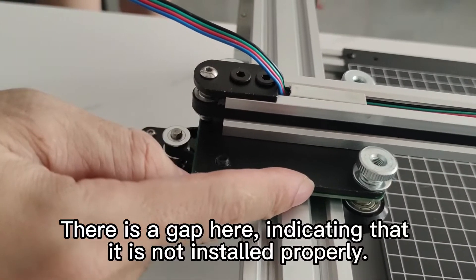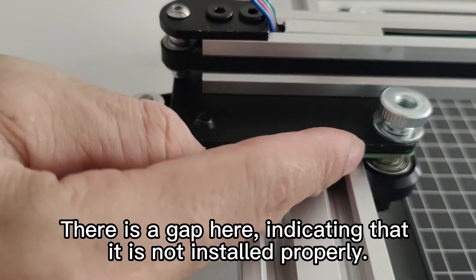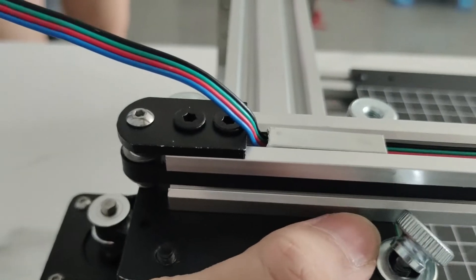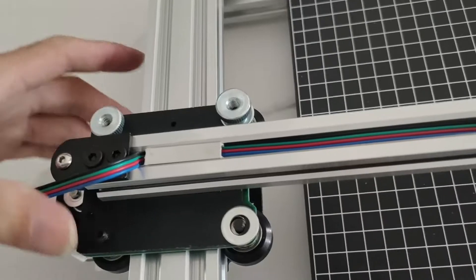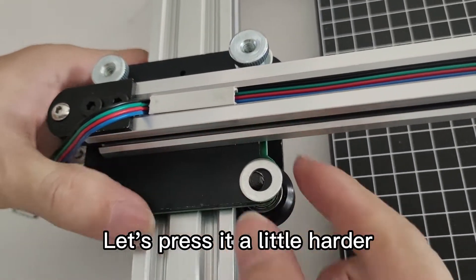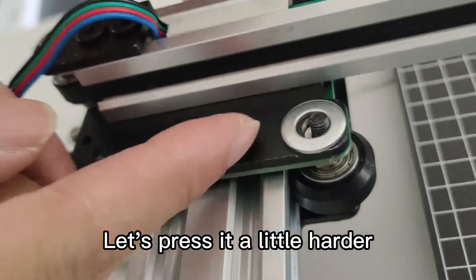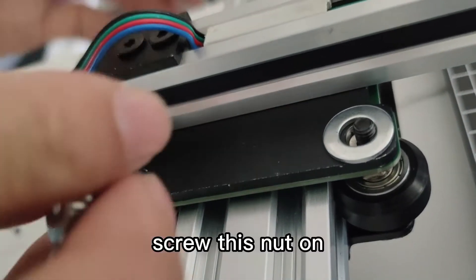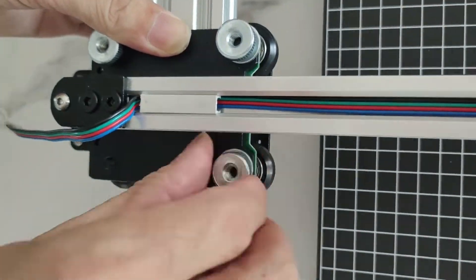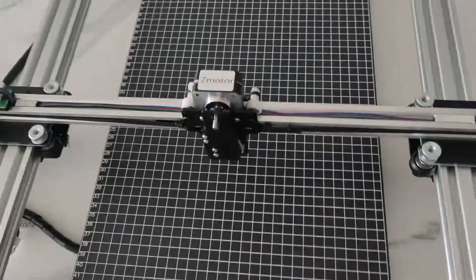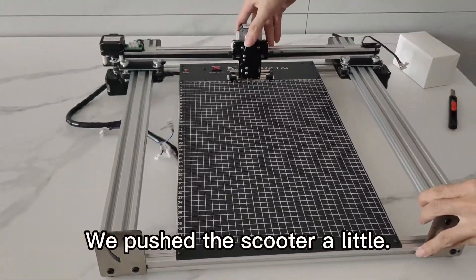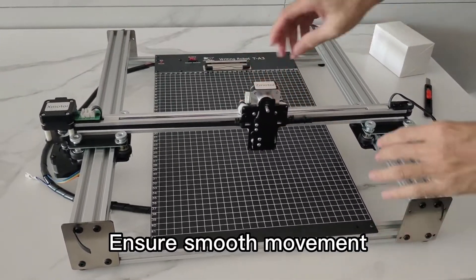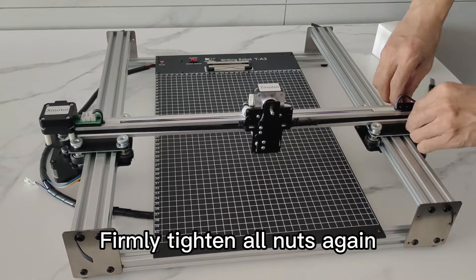There is a gap here, indicating that it is not installed properly. Let's press it a little harder. Screw this nut on. We push the scooter a little. Ensure smooth movement. Firmly tighten all nuts again.